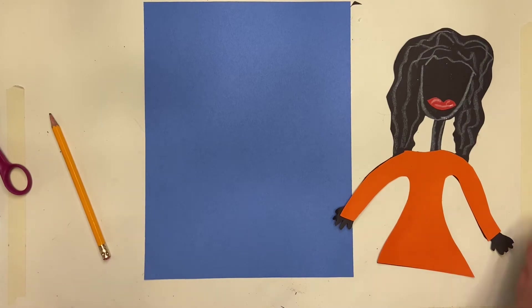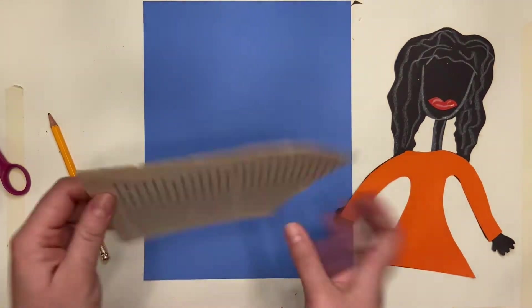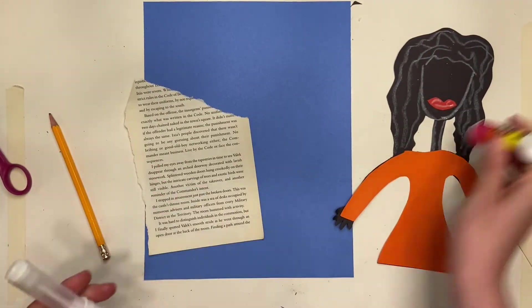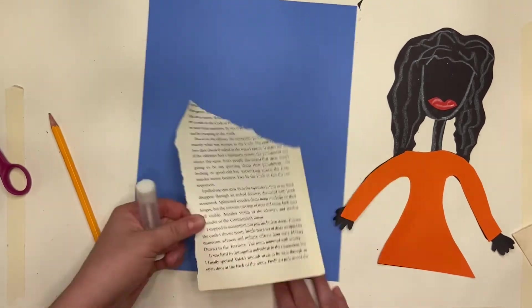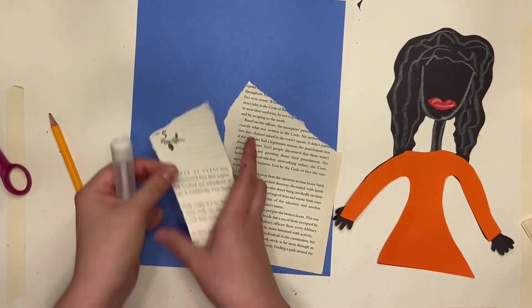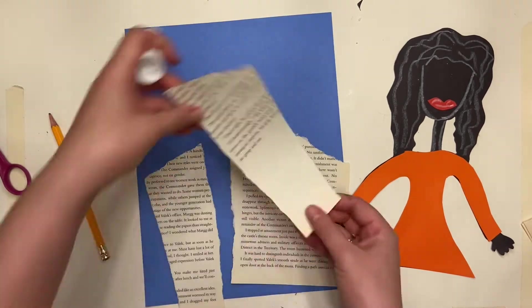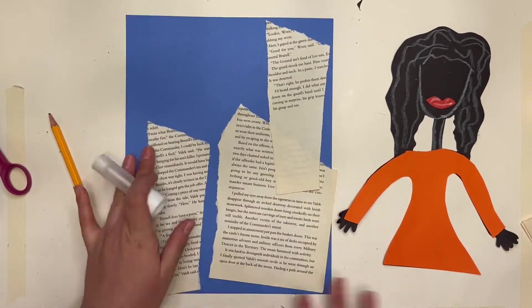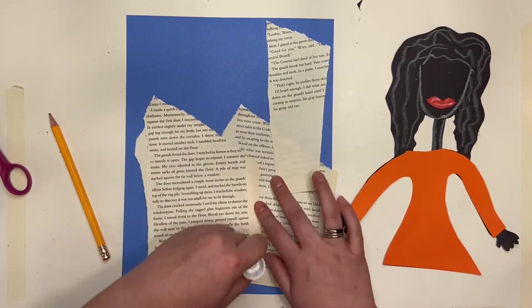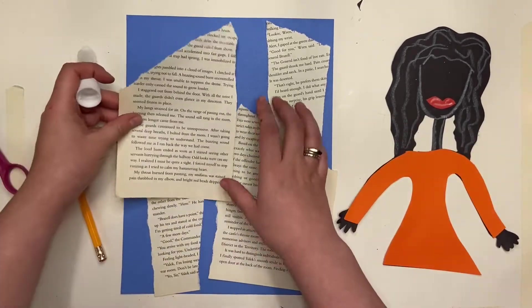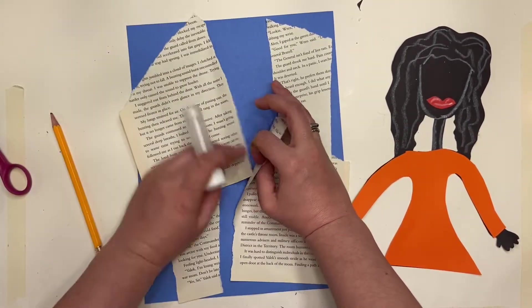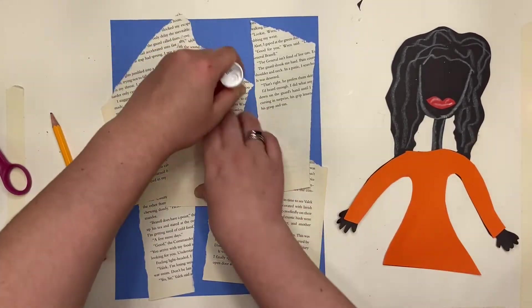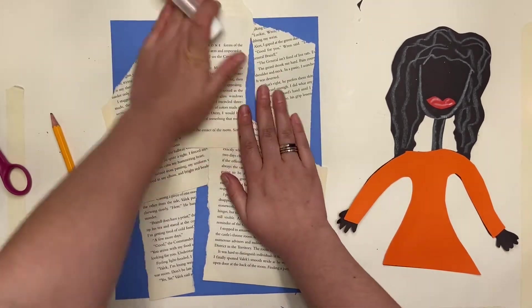Now we just need to do the background. So I have my blue paper and I have these pages from a book that got a little bit water damaged. And instead of throwing it away, I'm going to take the pages that are still usable and glue them, collage them, to my background. Because Leroy Campbell's work also has a lot of text backgrounds. So I'm kind of putting them on. I'm leaving a little bit of the blue peeking through. So you can kind of layer them however you want. You could use a newspaper. You could use a magazine. Anything you find that has some text on it.